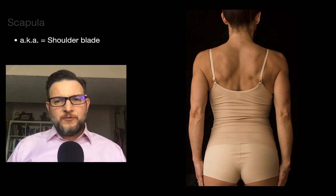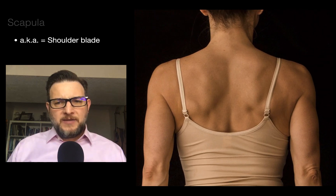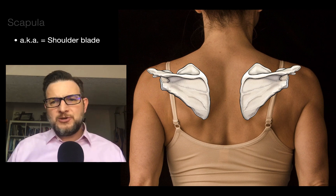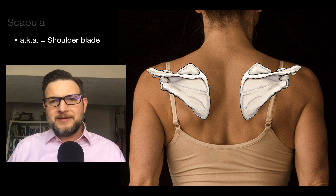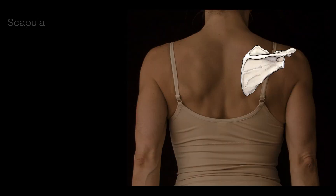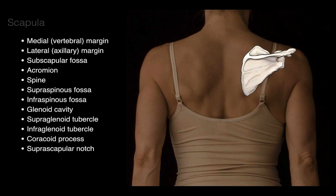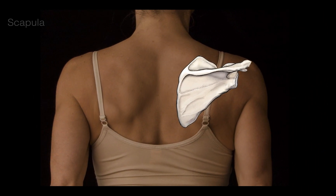If we take a look at the surface anatomy, we see these two bones that are flat and irregularly shaped that kind of look like a shovel. The scapula has the following bony landmarks that we're going to cover now.